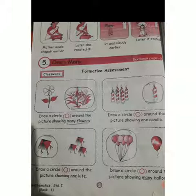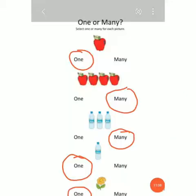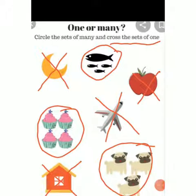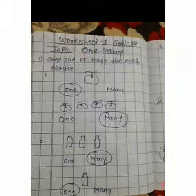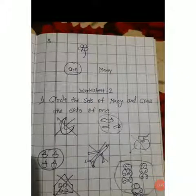In workbook we done page number 72 and 73, topic One and Many. Aapko yeh concept samajhne ke liye mein ne do worksheets bhi de diye hain. Worksheet one: Select one or many for each picture. And Worksheet two: Circle the sets of many and cross the sets of one. Yeh dono worksheets ko hamne maths notebook mein kiya hai.